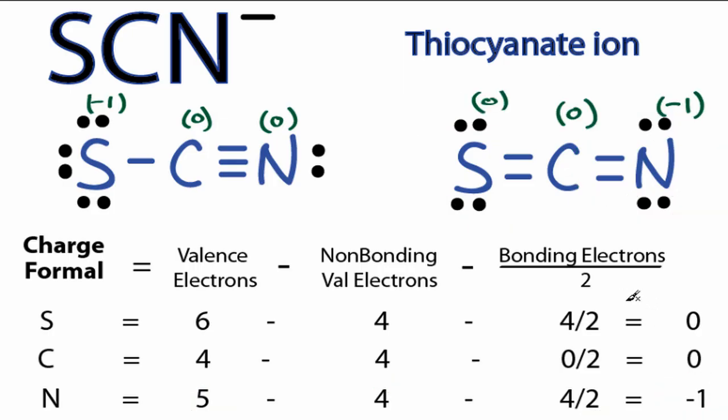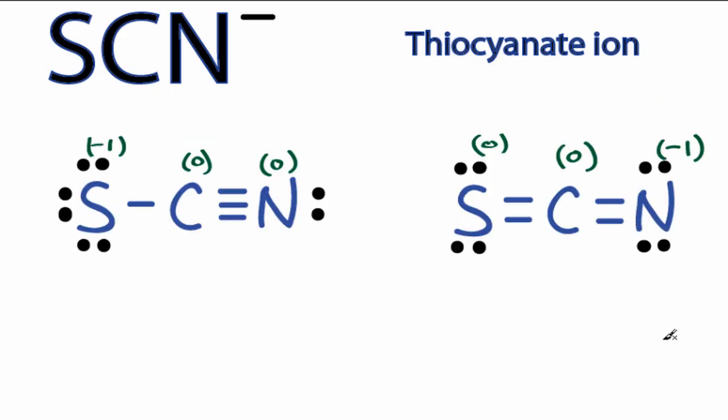At this point, we see that both structures are pretty much identical. The only difference is, over here the sulfur has a negative 1 charge, and over here it's the nitrogen that has a negative 1. We need to make a decision about which is going to be the most likely structure for the SCN minus ion to exist. There's really not a big difference between the two structures other than that negative 1 charge location, and that actually is going to make the difference.